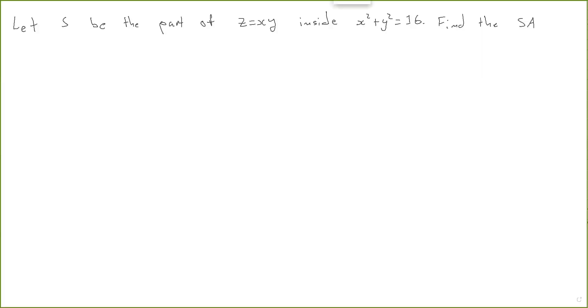Okay, so let S be the part of the surface Z equals XY inside this cylinder. We want to find the surface area of this surface. SA means surface area.